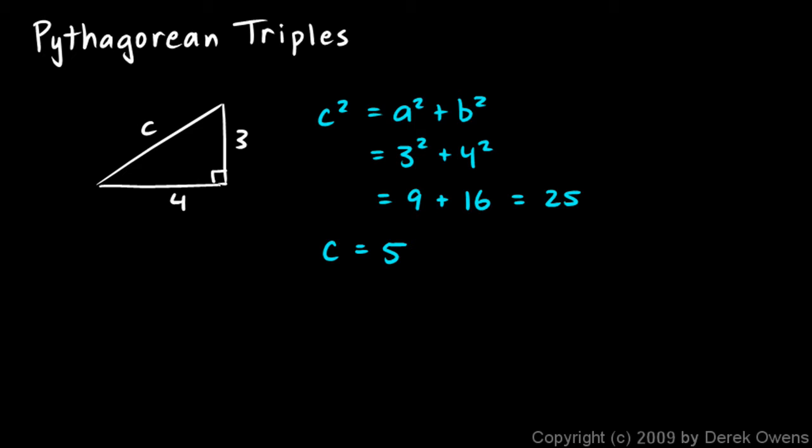And these numbers here, I'm going to scratch out the c there and write a 5. These numbers 3, 4, and 5, those are what we call a Pythagorean triple. Those numbers work together such that the Pythagorean theorem works out. And obviously not all numbers work together that way.